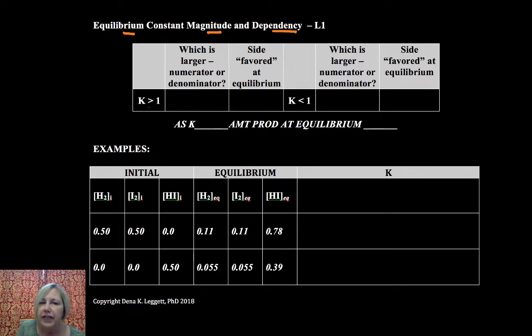Now, if the equilibrium constant is greater than one, that must mean that my numerator is greater than my denominator. Since it's products over reactants, that indicates that overall, at equilibrium, the products are favored. So with large K's greater than one, you have a product-favored system.